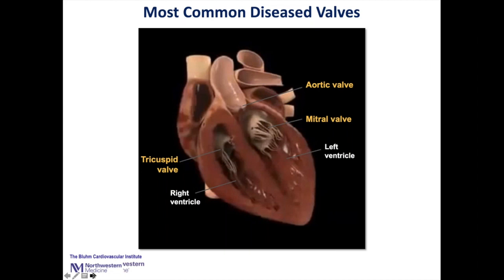As blood comes back from the lungs, it goes into the left atrium, goes through the mitral valve into the left ventricle, and then out through the aortic valve.